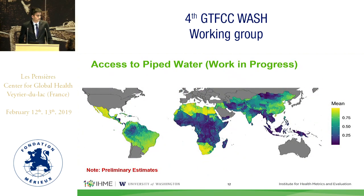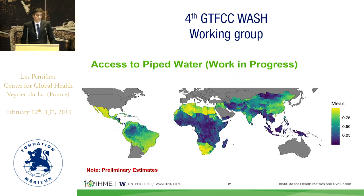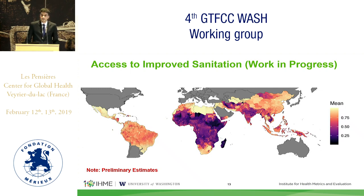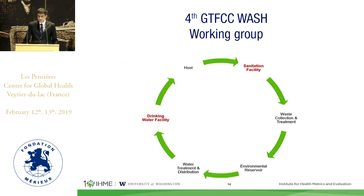These are our preliminary maps. We are currently estimating both access to water and sanitation across 103 countries. We see the classic pattern — for example, in India, southern India has higher access than northern India — and we're in the process of iterating across this. This is piped water; this is improved sanitation. We're hoping that by making these maps publicly available, they will be useful for the GTFCC and other decision makers in identifying hotspots or any other research gaps that are needed.